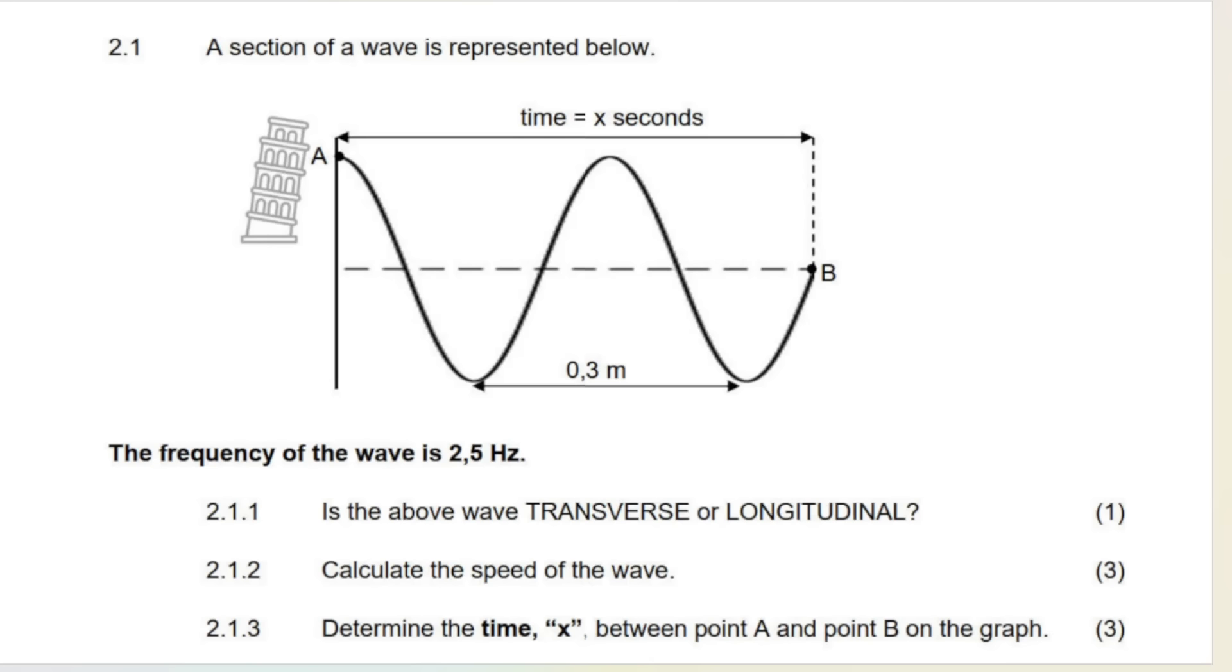Let's jump right in with the first question. So they give me a section of a wave, and what's very important to understand is that they give me two things on this diagram. They give me a point A, they give me a point B, and they're showing me that the distance from A to B takes x seconds. They also give me a distance on the diagram. So they're saying from this trough, which is the lowest point on the wave here, to this trough is 0.3 meters. So the distance between two consecutive troughs is 0.3 meters. They also give me the frequency of the wave, which is very very useful.